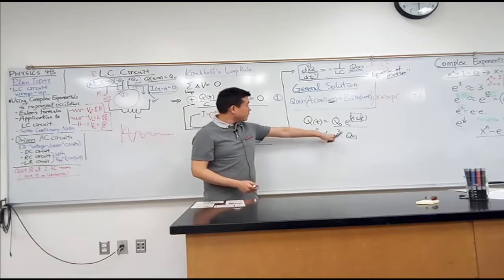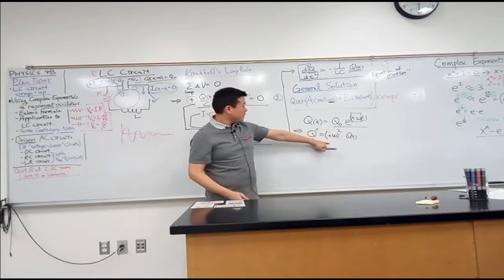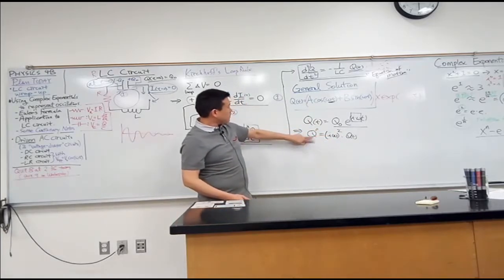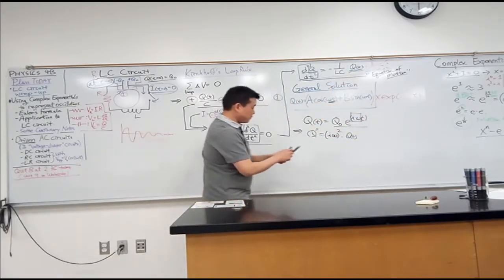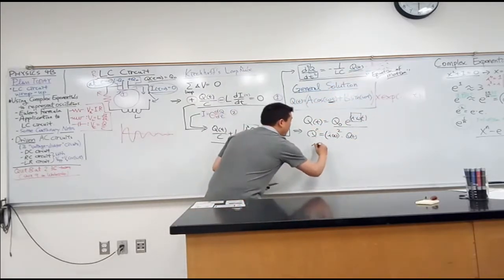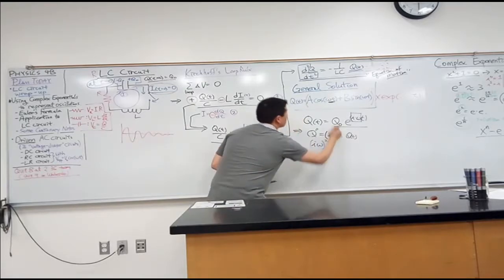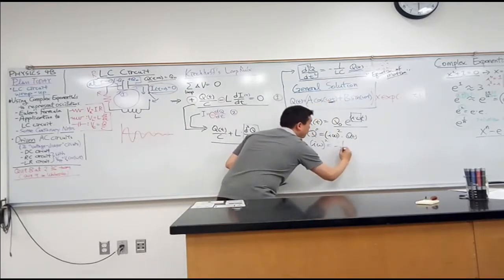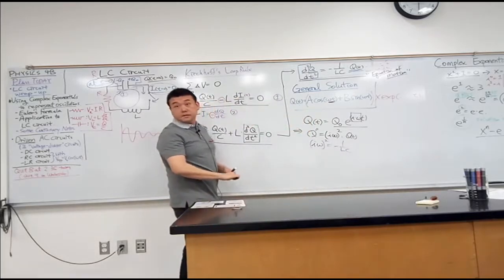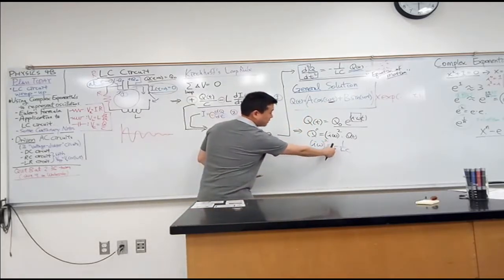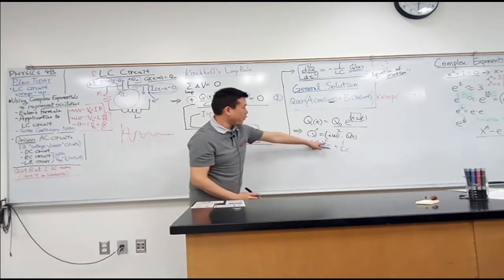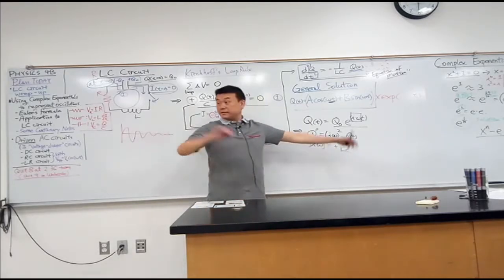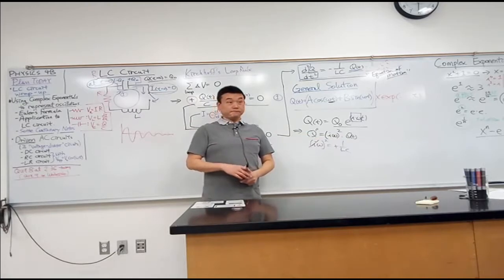So this is the left hand side, this is the right hand side here, so we simply need to say i omega squared is equal to minus 1 over LC, and i squared is minus 1. So we end up with omega squared is equal to 1 over LC. That's what we wanted, right?